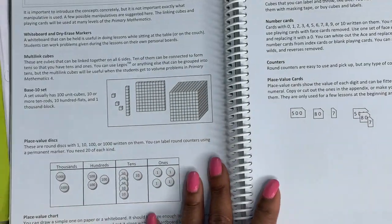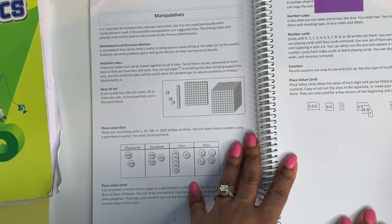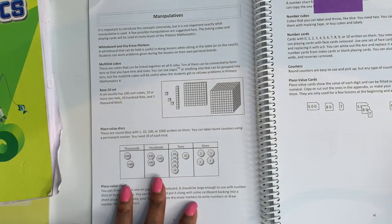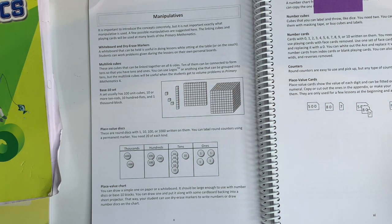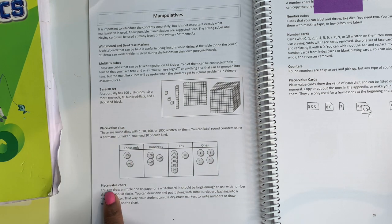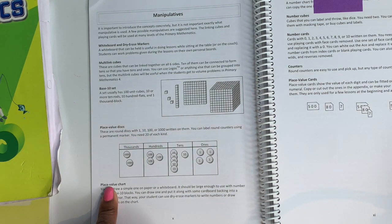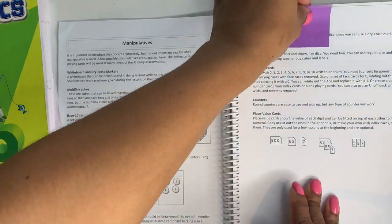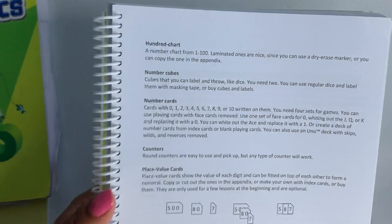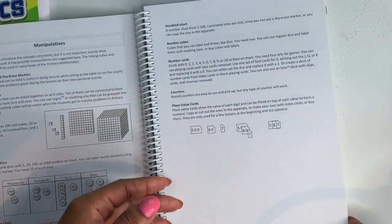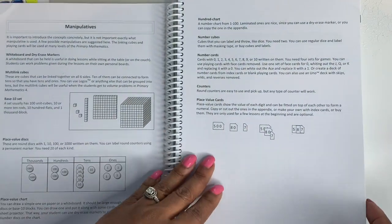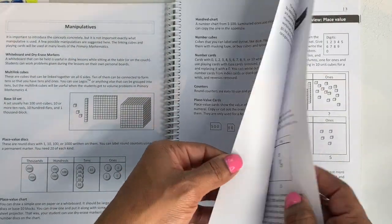So after you look at the scheme of work, you have your manipulatives. And it shows you all the different kinds of manipulatives you'll use in this book, in this curriculum. And they give you a description on what they are and how to use them. So you have a whiteboard, dry erase markers, multi-link cubes, base 10 set, place value disc, place value chart. I'll watch my video on my math manipulatives. And I talk about the place value chart and the base 10 set. And then you have over here, your hundred chart, number cubes, number cards, counters, and place value cards. I think when I bought this, I think it came with number cards or something. I'm not sure. I bought this like millions of years ago. So that's your manipulatives.